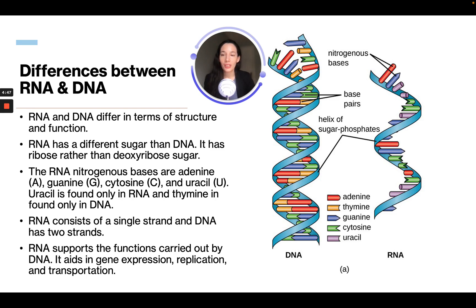RNA and DNA differ in terms of structure and function. RNA has a different sugar than DNA — it has ribose rather than deoxyribose sugar. The RNA nitrogenous bases are adenine, guanine, cytosine, and uracil. Uracil is found only in RNA, and thymine is found only in DNA. RNA consists of a single strand, while DNA has two strands. RNA supports the functions carried out by DNA, aiding in gene expression, replication, and transportation.